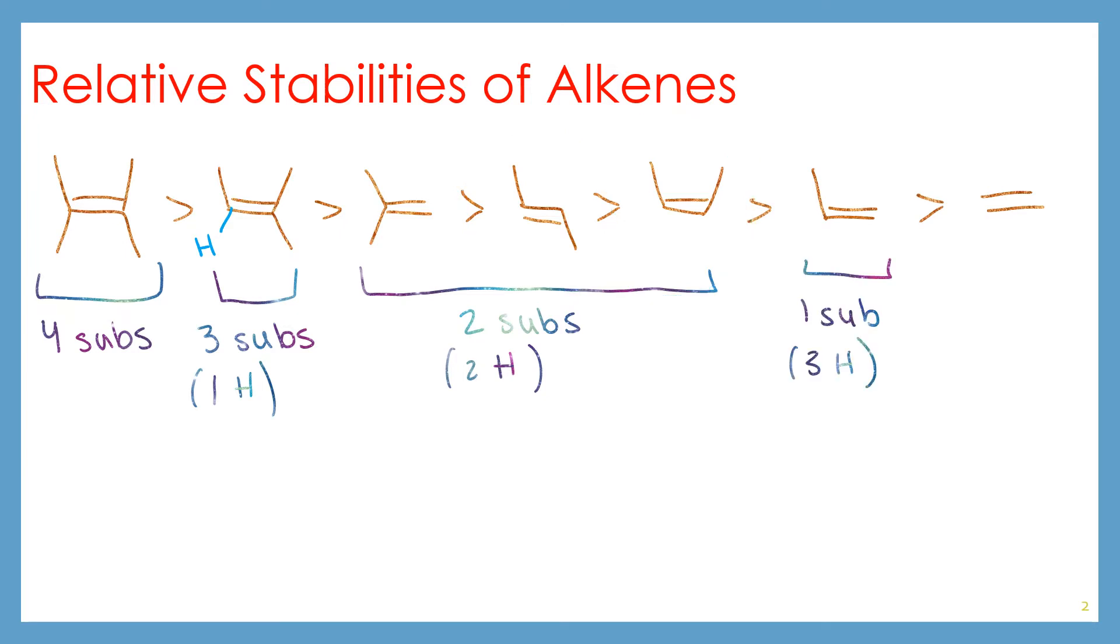And then we have our 1 substituent alkene and our 0 substituent alkene. So the greater number of substituents on the alkene is going to stabilize the alkene because of the hyperconjugation that happens between the alkyl groups and the pi bonds of the alkene. So the alkene is able to share electron density and also gain electron density through sigma orbital overlap with the neighboring hybridized p orbitals.